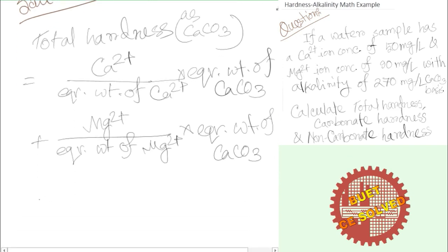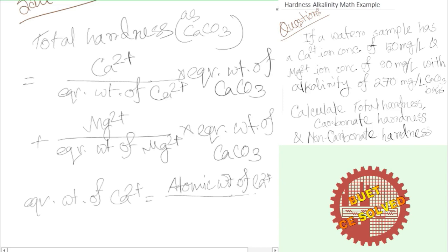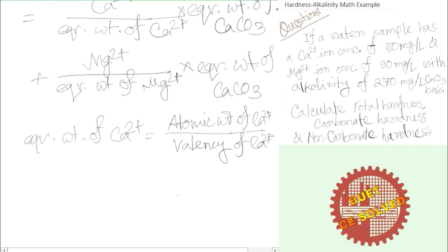For calcium and magnesium concentrations, we need the equivalent weight of calcium. The equivalent weight is the atomic weight divided by the valency used by that ion or compound. The atomic weight of calcium is 40 and valency is 2, so the equivalent weight of calcium is 20.